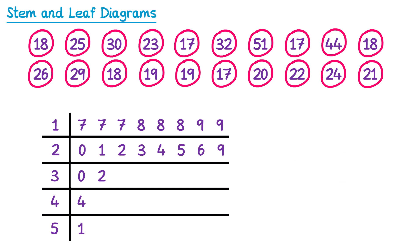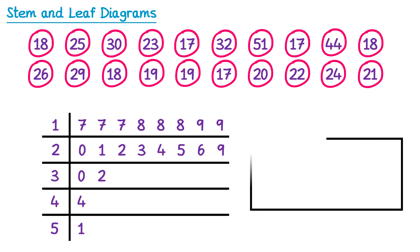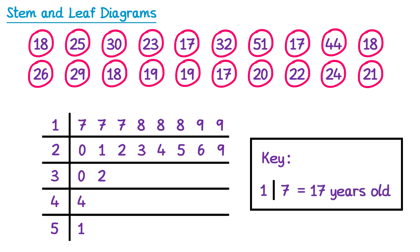So we've now placed all of these numbers into the diagram. It's a good idea at this point to count up how many leaves you have and check that matches how many numbers you started with — it's easy to miss one. Finally, to complete the diagram we need to add a key. A key helps anyone who looks at the diagram understand what the data is telling them. I'll pick the smallest number, 17, writing 1 then the vertical line then 7, and state that this equals 17 years old.